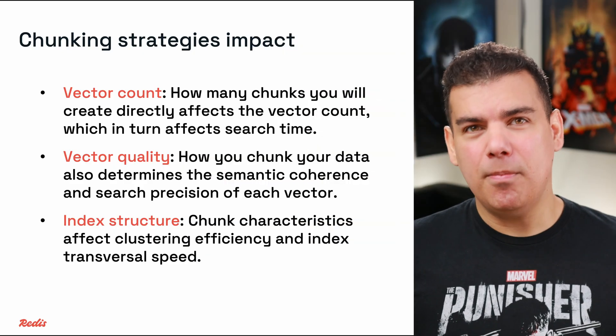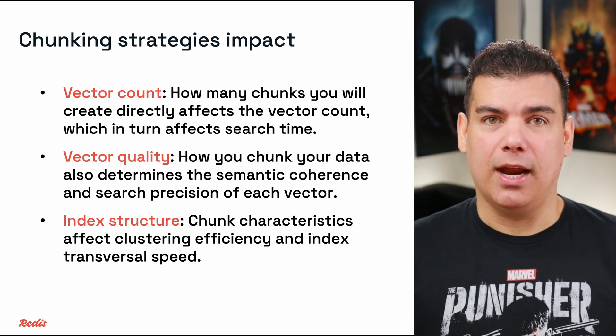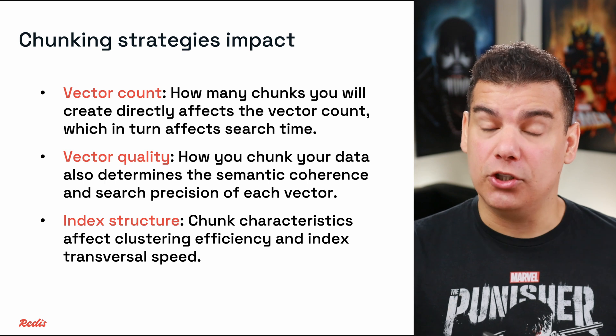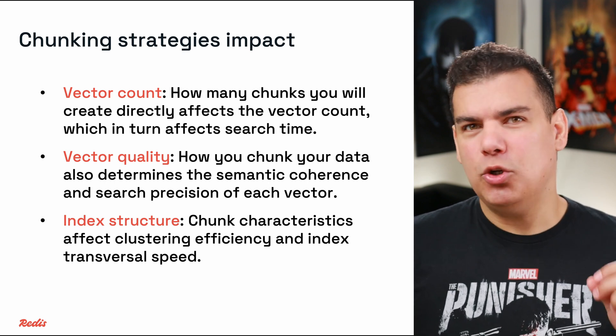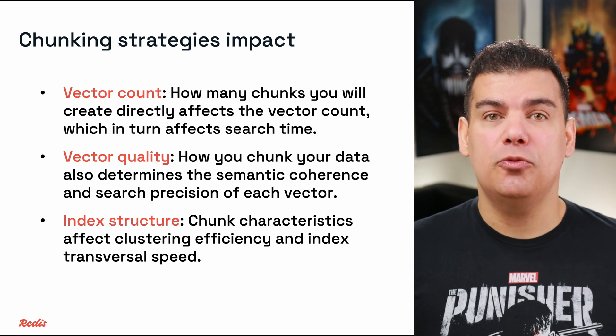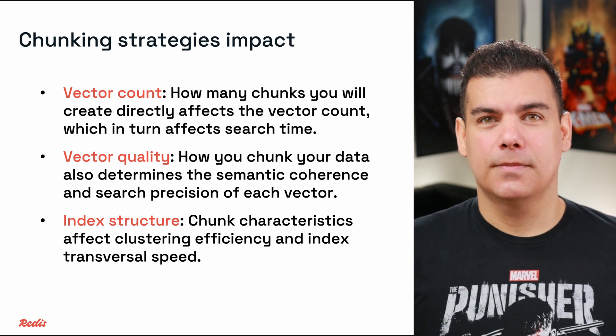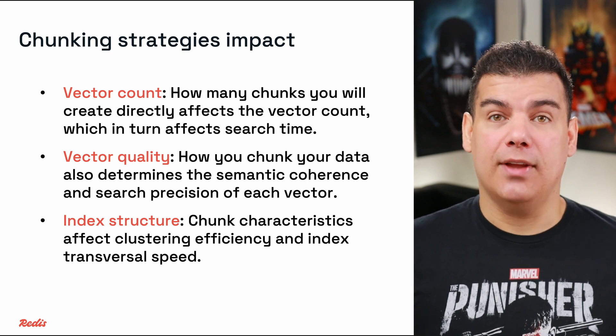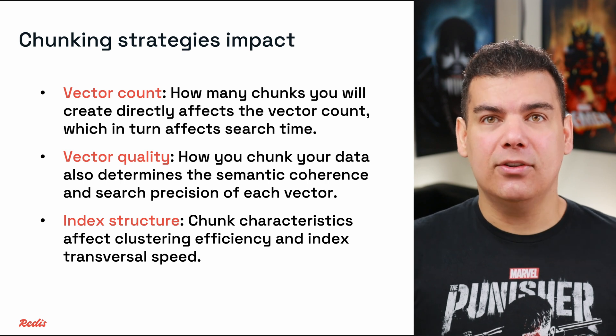Now let's talk about chunking strategies. Chunking strategies determine how your source content is divided into pieces before vectorization. This pre-processing step influences both the quality and quantity of vectors in your database, with direct performance implications. Chunking directly impacts vector database performance in three critical ways: first, vector count — the number of chunks directly translates to vector count, which has a linear relationship with search time; second, vector quality — how you chunk determines semantic coherence and search precision of each vector; third, index structuring — chunk characteristics affect clustering efficiency and index traversal speed.